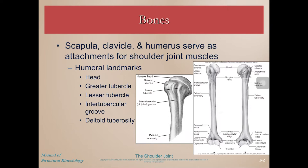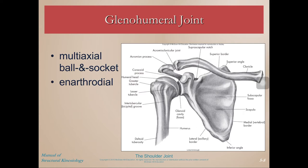Now for the bony landmarks, we're focusing on the scapula and the humerus. The head of the humerus is the part that articulates with the glenoid fossa. The greater tubercle is at the top, the lesser tubercle is here, and between them is the intertubercular groove. Then there's the deltoid tuberosity further down where the deltoid inserts.